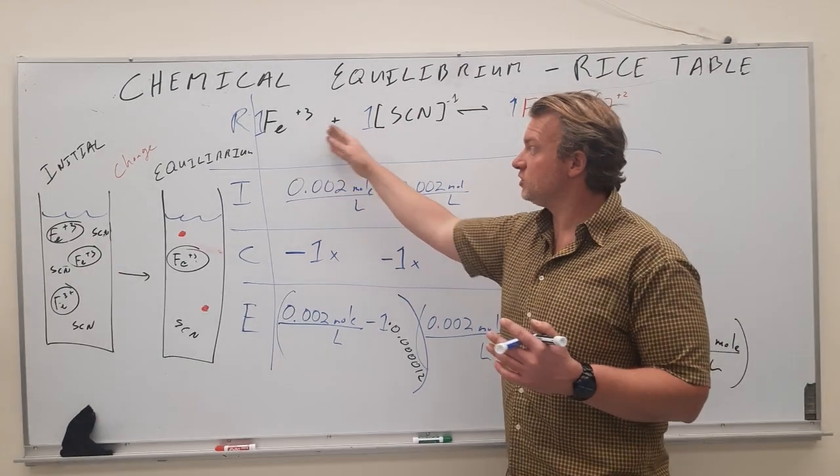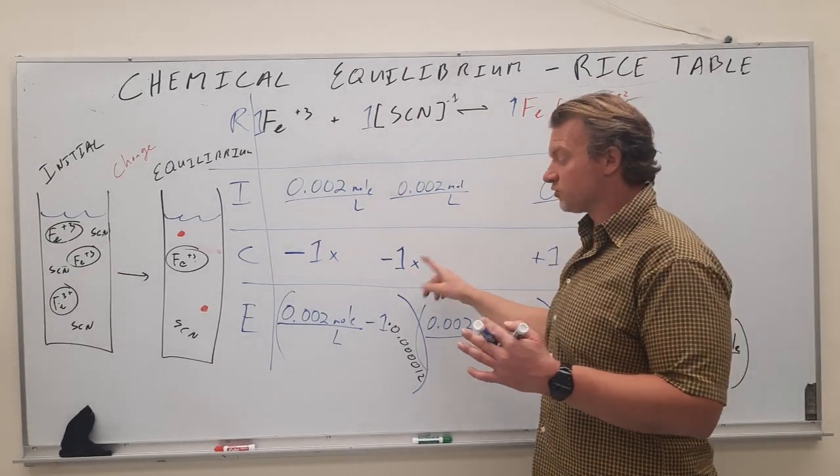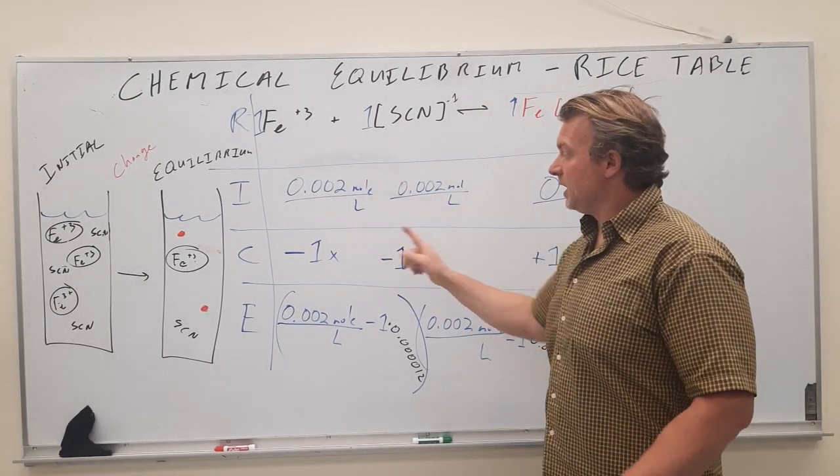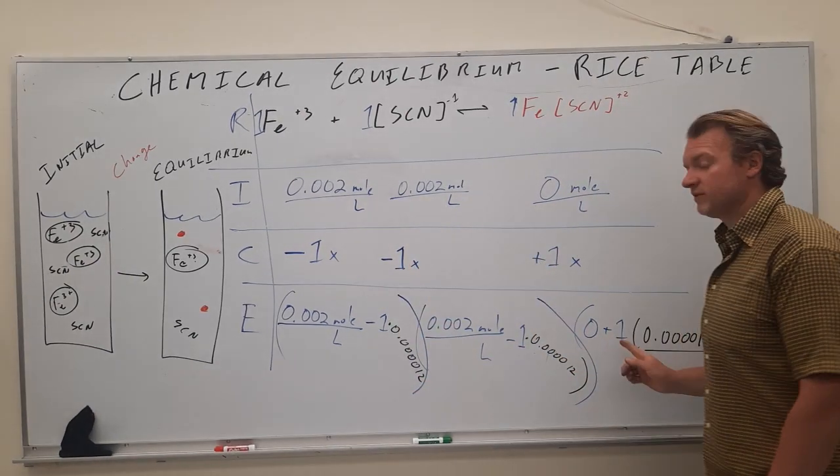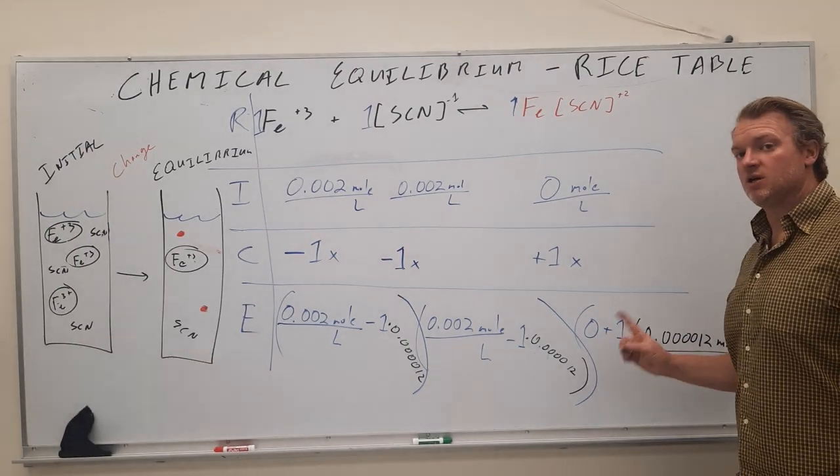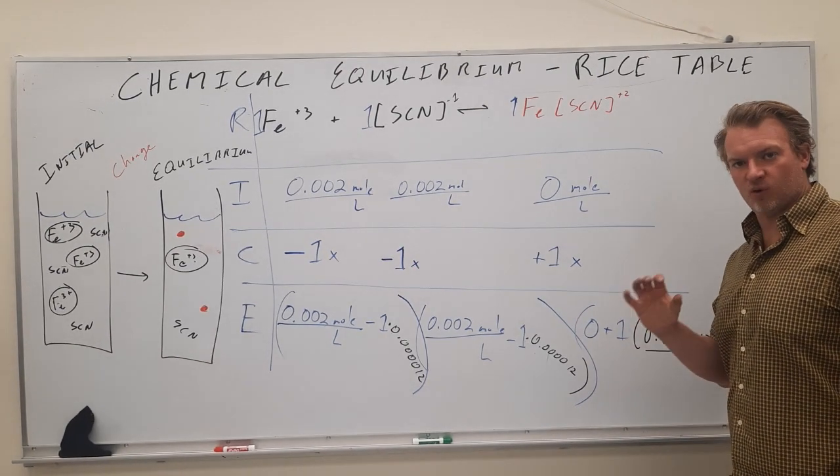These numbers are going to change depending on what the balanced chemical reaction is. If your balanced chemical reaction had two threes and fours, there should be two threes and fours down here. And the x is what we're ultimately solving for. In this example, we're solving for x spectroscopically using a calibration curve at the 450 nanometers.